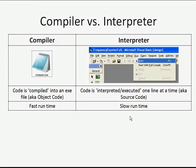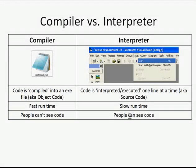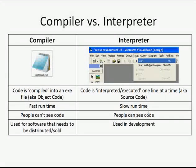Compilers run code very fast. Interpreters run code very slow in comparison. So the compiler has an advantage there over the interpreter. Another advantage for the compiler is that people can't see your code. Unless you're a really good hacker, I wouldn't be able to see the code that made notepad.exe for instance. In an interpreter, people can see your code and that's because it's used in the development environment. Compilers are used for software that needs to be distributed or sold.